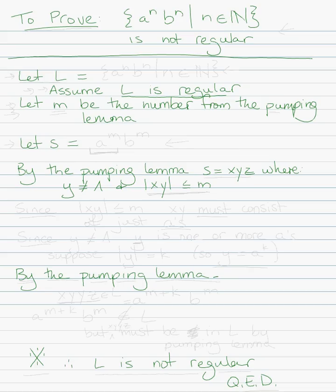So this is the outline of a proof, and pretty much every proof that you write is going to look like this. Up at the top, we have the thing we want to prove. We start by saying 'let L equal whatever our language is' and 'assume L is regular,' and then we say 'let m be the number from the pumping lemma.' So let's get started now. We're going to let L equal the language a to the n, b to the n, such that n is an element of the natural numbers, and assume L is regular.